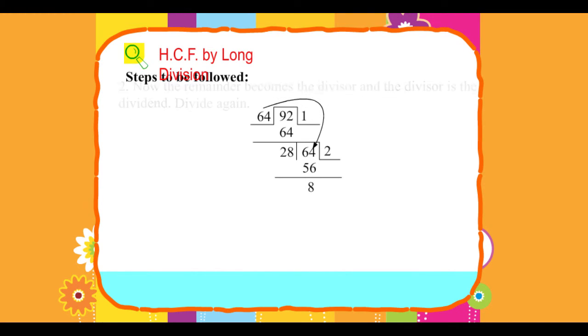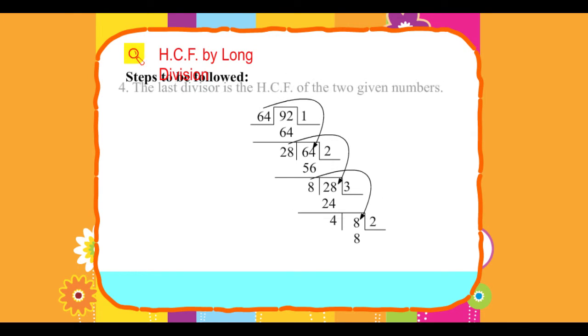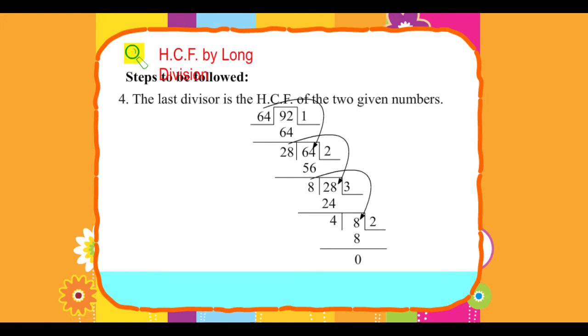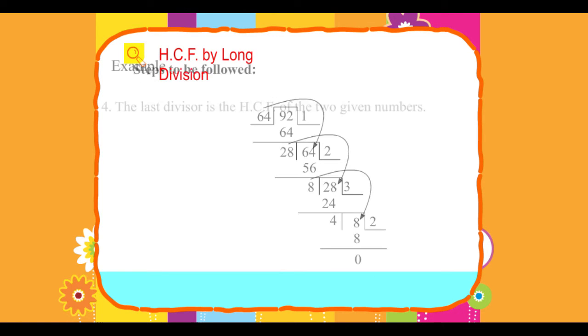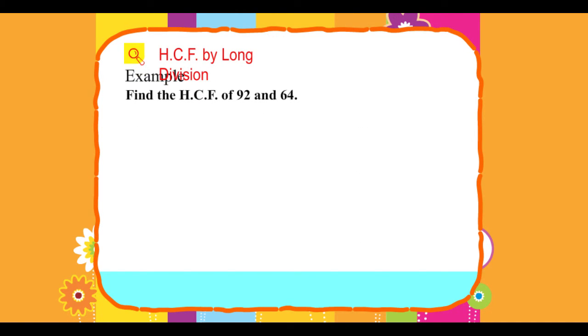Divide again. 3. Continue till the remainder is 0. 4. The last divisor is the HCF of the two given numbers. Example: Find the HCF of 92 and 64.